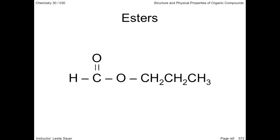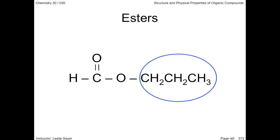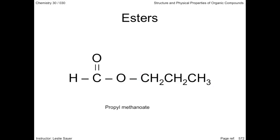The acid part of this compound is methanoic acid, so we drop the 'oic acid' and add 'oate,' giving us methanoate. The prefix is the alkyl group on the other side, and we see that it's a propyl group. So we have propyl methanoate.